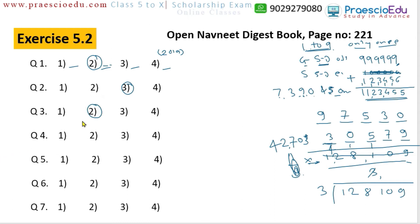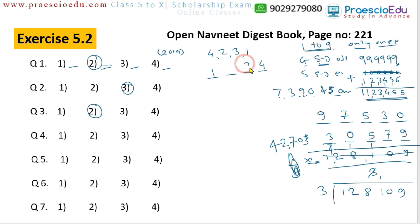Question number 4: using each of the digits 4, 2, 3, 1 — where 1 is only once — find the smallest possible 4-digit number. We start with the smallest digit 1, then maintain the greatest digit at the units place: 4 at units, 3 at tens, 2 at hundreds. The question asks which digit is at the tens place — so the answer is 3. This is maintained at option number 2.